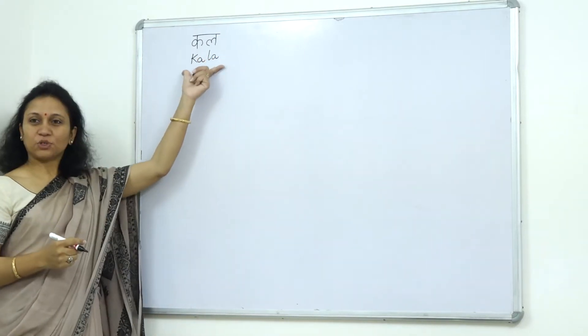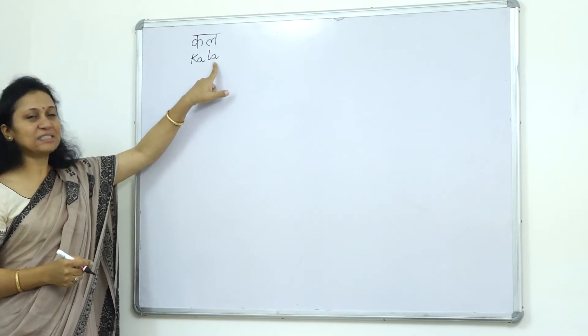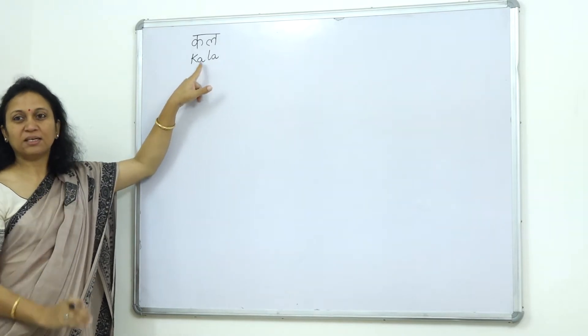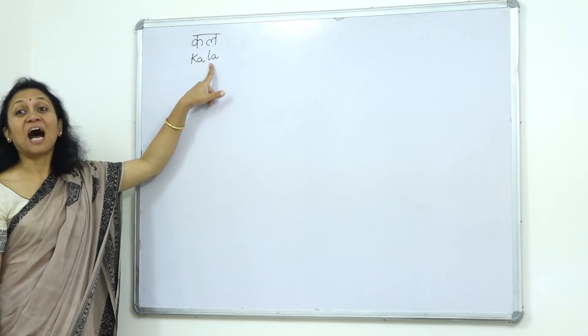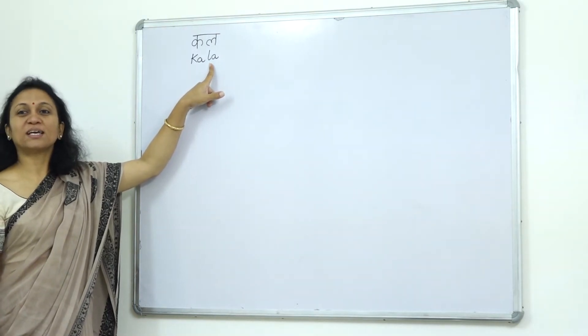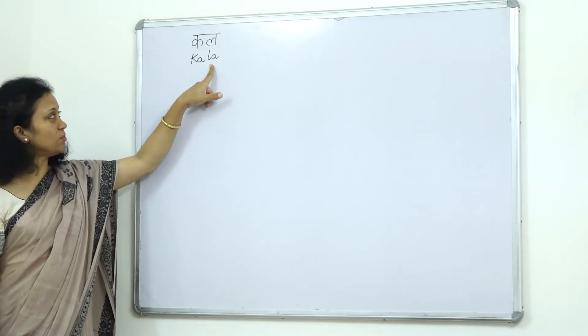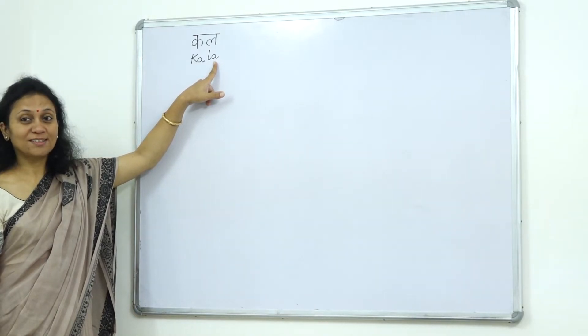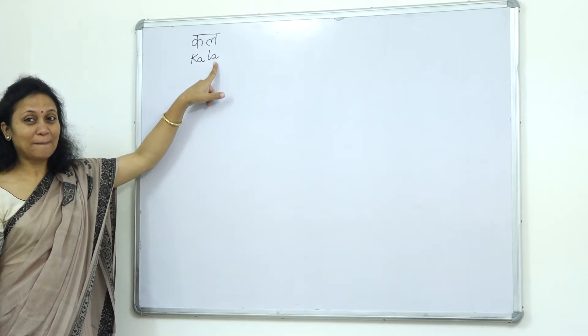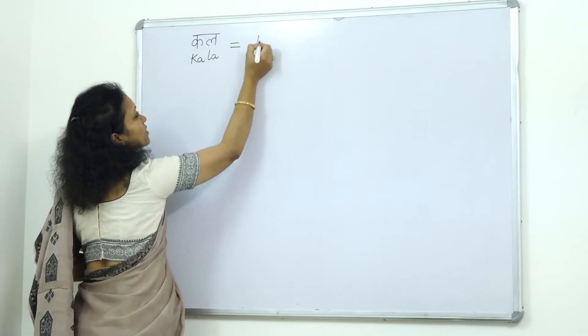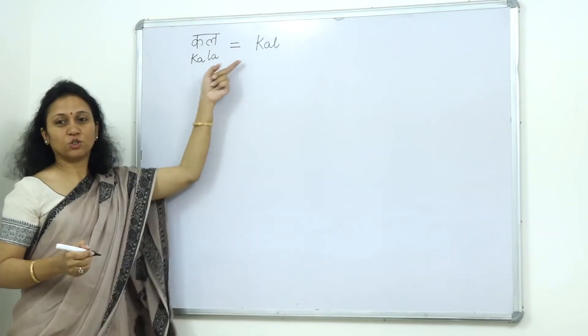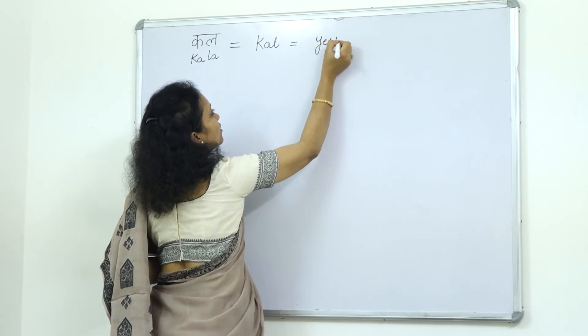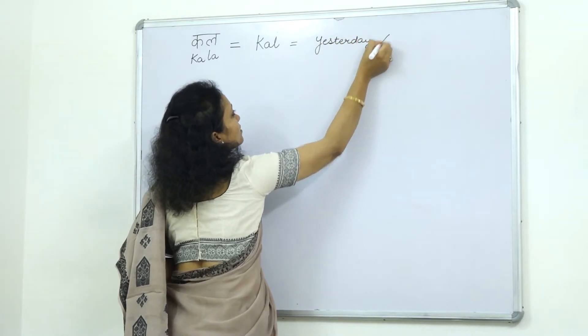And when you speak them together, just remember the last A is dropped down. Otherwise what are these two letters together? When you are just saying, you actually drop down the last A, and so it becomes kal. That's right. So when you speak this, then it is going to be kal because you drop down the last A. So yesterday or tomorrow.